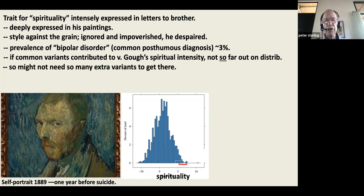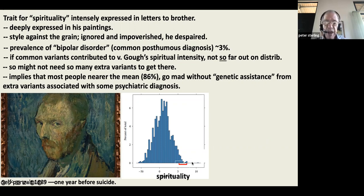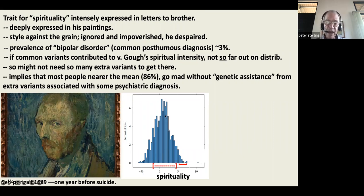For most people — 86% of us — who go mad, we do so without the genetic assistance of extreme variants associated with psychiatric diagnoses. This means that for most of the people you encounter, you mostly don't have to worry about their family history — you mostly have to be concerned with what has happened to them.